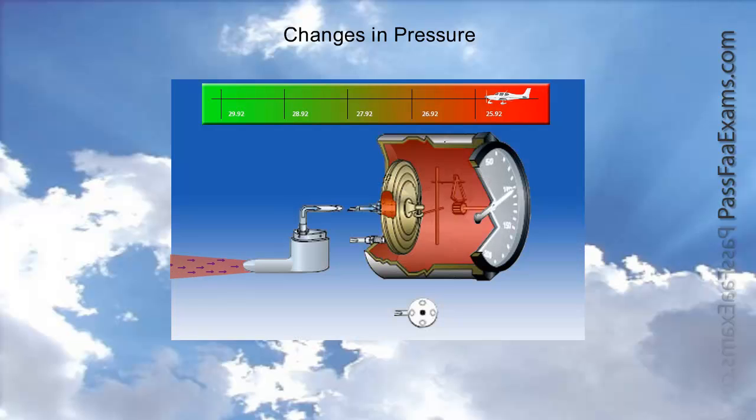The reason is that the chamber of the airspeed indicator is connected to the static port. And this means that as we fly along, as shown by the animation, from, in this case, low pressure to high pressure, the pressure differential between the diaphragm and the airspeed chamber stays the same. And the diaphragm expands and contracts only as a result of changes in impact air. So if the speed doesn't change, the airspeed indication remains unaltered.